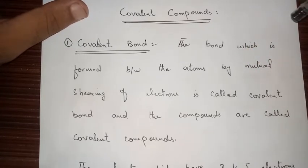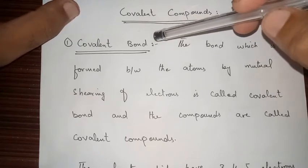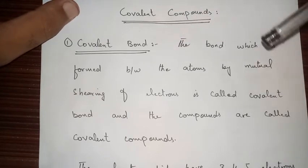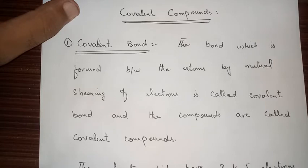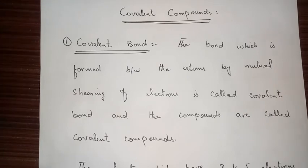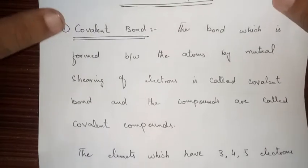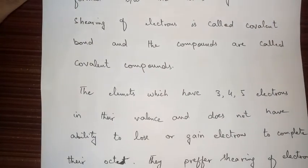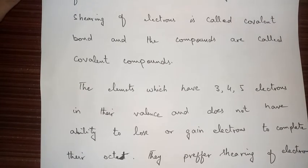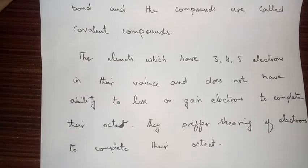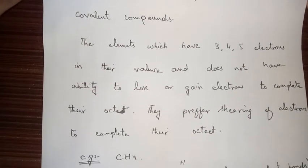Today our topic of discussion is covalent compounds. The bond which is formed between atoms by the mutual sharing of electrons is known as a covalent bond, and the resulting compounds are known as covalent compounds. Atoms that have three, four, or five electrons in their valence shell and do not have the ability to donate or gain electrons prefer sharing electrons to complete their octet, so they form covalent bonds.